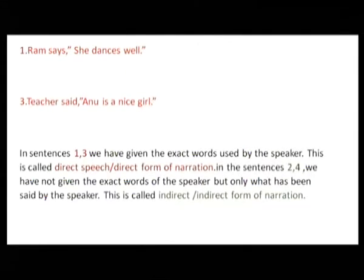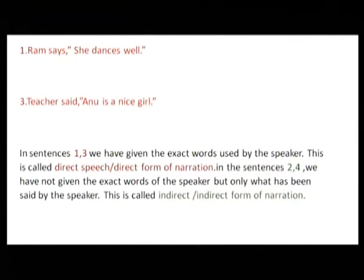In sentences 1 and 3, we have given the exact words spoken by the speaker. The exact words that the speaker says are placed within inverted commas — she dances well, and Anu is a nice girl. These are direct speech. Direct means the words that directly come out of the speaker's mouth. That is direct speech or direct form of narration.